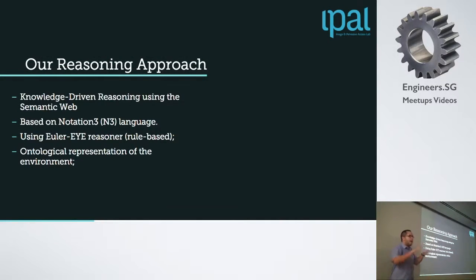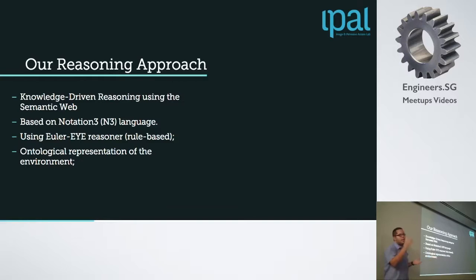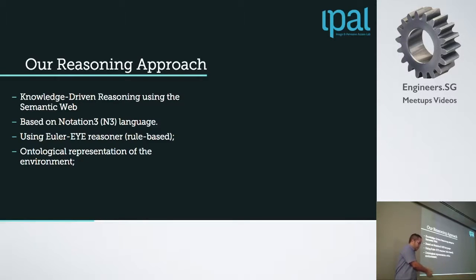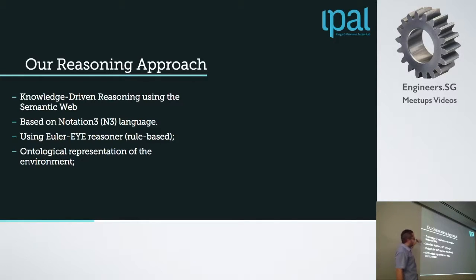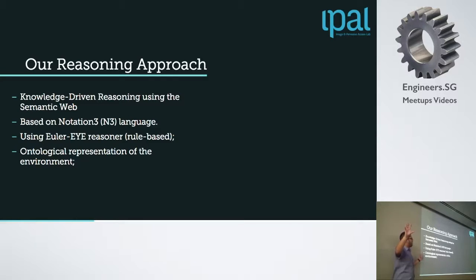Let me talk about reasoning. We have a web-based system, but our focus is basically research and reasoning. What is exactly reasoning? The idea is that given a sequence of events, we should identify what kind of actions we should take in response. For example, if my grandmother falls down on the floor — identified based on the shape of the body — we propose to call or notify the caregivers. We use knowledge-based driven reasoning using semantic web, and the representation of data from the semantic web.